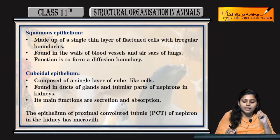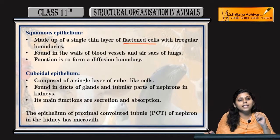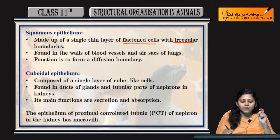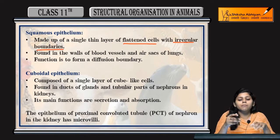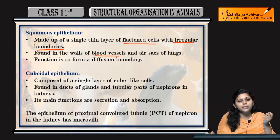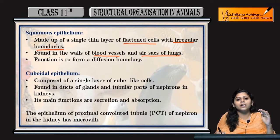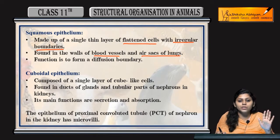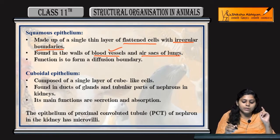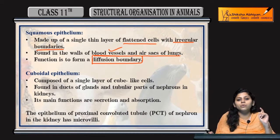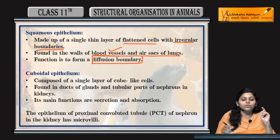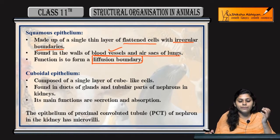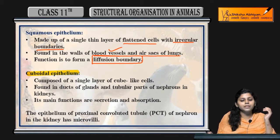Squamous epithelium consists of flattened cells with irregular boundaries. Where are they found? In blood vessels and air sacs of the lungs. Their function is that they form a diffusion boundary so that diffusion can occur easily.